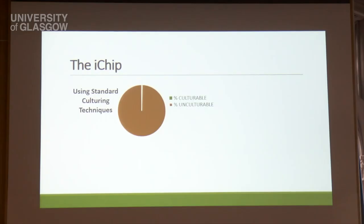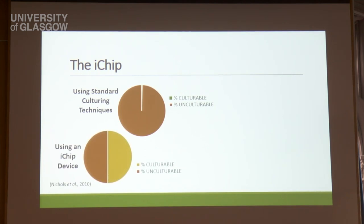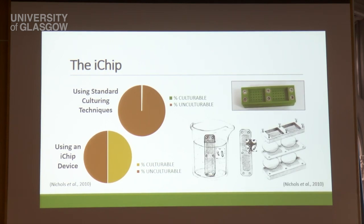One method of doing this is to grow soil bacteria in their natural environment instead of in the lab. Whereas standard culturing techniques leave 99% to 99.5% of all bacteria unculturable, when an I-chip is used, we can culture up to 50% of all soil bacteria — which is a massive increase. Here's what an I-chip looks like; I'm going to go on to talk about what it is and how it's used.